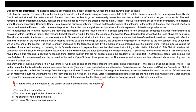Let me look into each of the options and analyze them. The first option says they competed for credit for a certain theory. The second option says the three ordering principles of Neoplatonism. The third option is the change of role of the Demiurge. And the fourth option is the use of Numinus's work as reference.